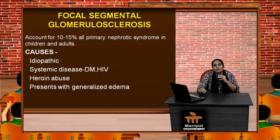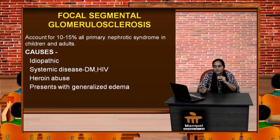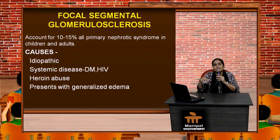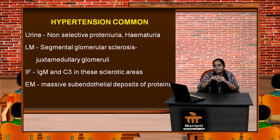FSGS — focal segmental glomerulosclerosis — involves segmental involvement of the nephrons. It accounts for around 10 to 15% of all primary nephrotic syndromes in both children and adults. Etiologies include idiopathic causes and systemic illnesses like diabetes mellitus, HIV/retroviral disease, and heroin abuse. Patients present with generalized edema, hypertension, and non-selective proteinuria. Hematuria may be present. Light microscopy reveals segmental loss of glomeruli due to sclerosis.